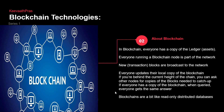In blockchain, as I said in the previous lecture, everybody has a copy of the ledger. So everyone is actually running a blockchain node, part of the network. The new blocks are actually broadcast to the network — say suppose a new block is coming in, someone is mining it, and it is actually broadcast to the network and everybody updates their local copy of the blockchain.